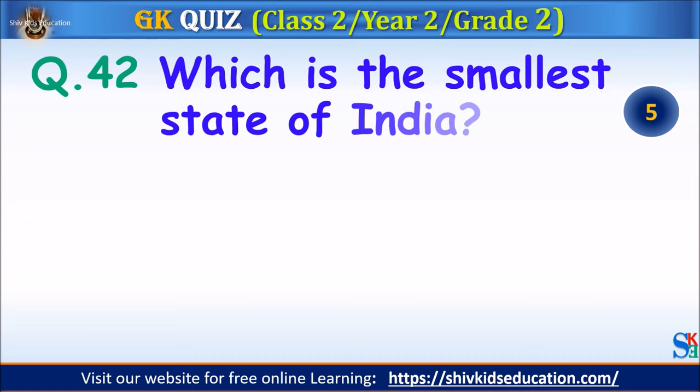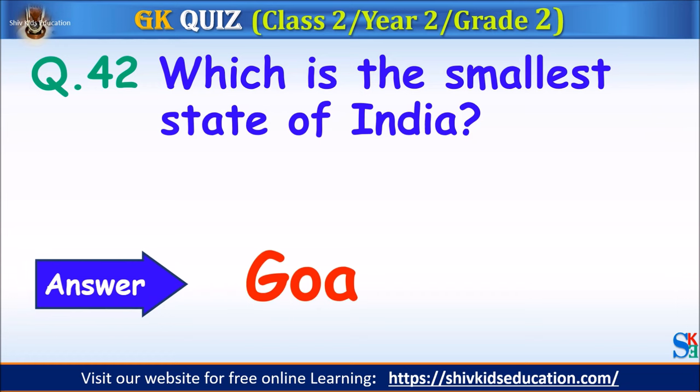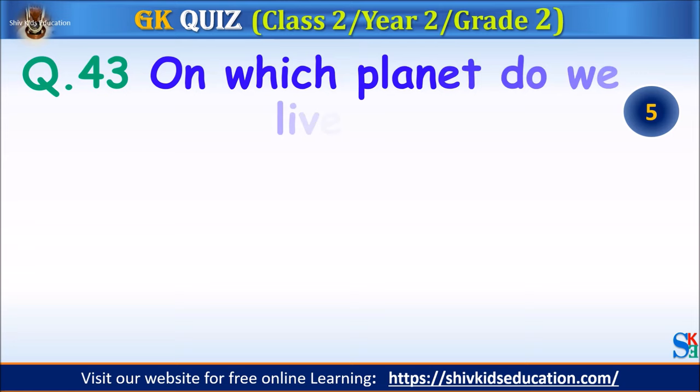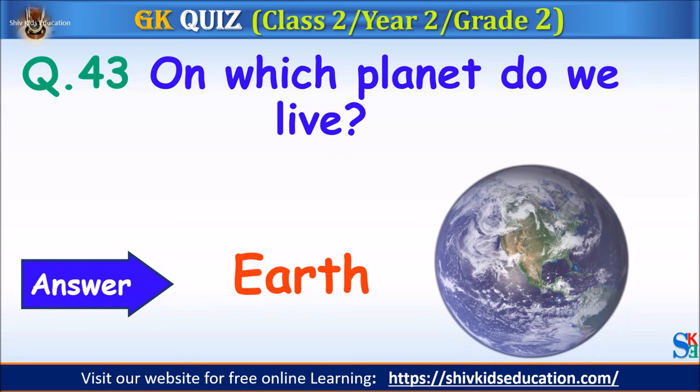Question 42: Which is the smallest state in India? Your time starts. The answer is Goa. Question 43: On which planet do we live? Your time starts. The answer is Earth.